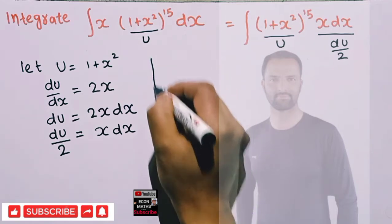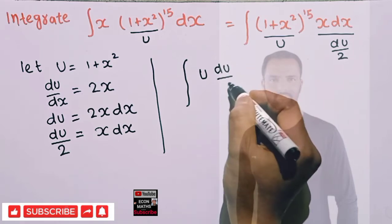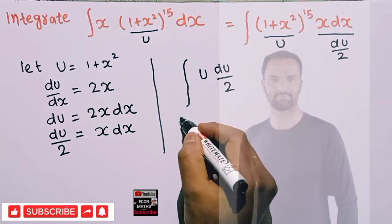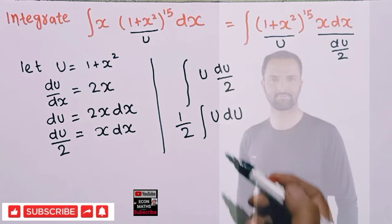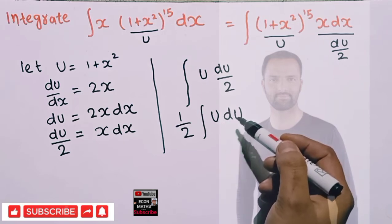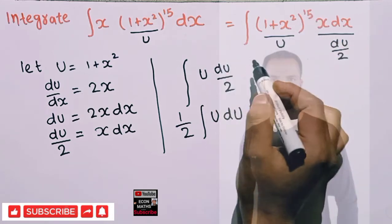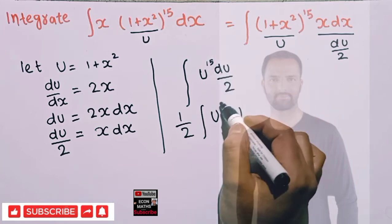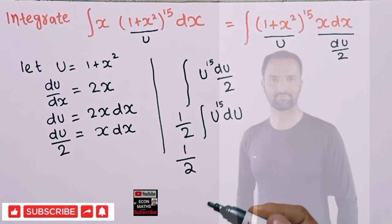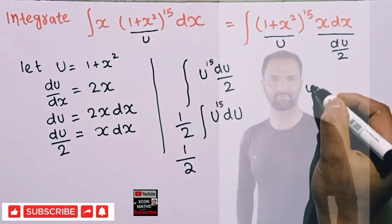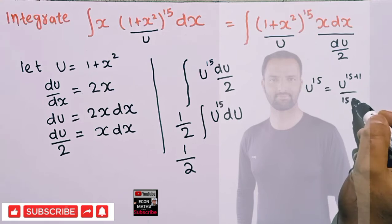So we can write this function as the integral of u to the power 15 times du upon 2. Taking the 1/2 outside, we have one half times the integral of u to the power 15 du. Now we apply the power rule: the integral of u to the power 15 is u to the power 15 plus 1, divided by 15 plus 1.